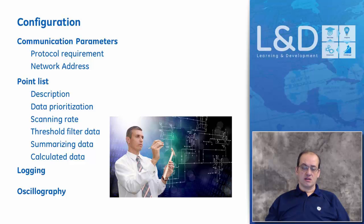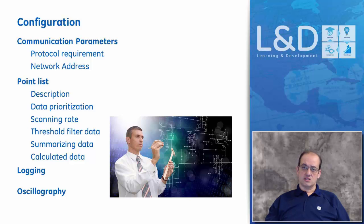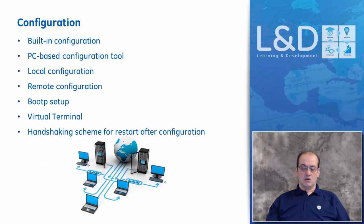We also consider the scanning rate — how fast we need to scan for data, and what the IED's capability is to look at that data. What is the threshold at which the IED can no longer sense data? What capability do the buffers inside the IED have for logging operational and non-operational data? And can we trend this information? All of these capabilities play a role in how the IED can be utilized in a substation.